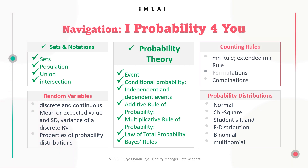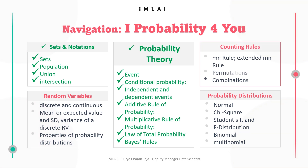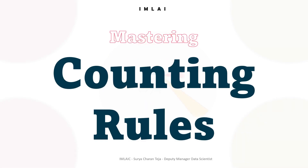These are a few more sections we have to complete in this Intuitive Probability for You course, which itself comes under the big umbrella of the Intuitive Statistics and Probability for Data Scientists course. With this, we are beginning to master counting rules and counting principles.